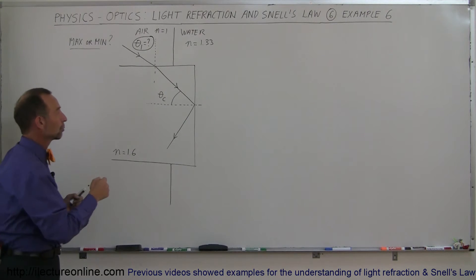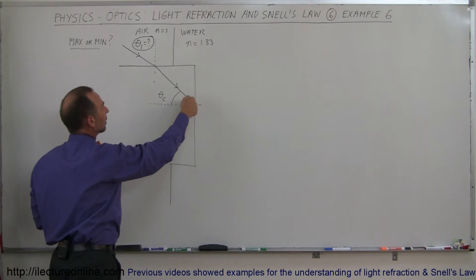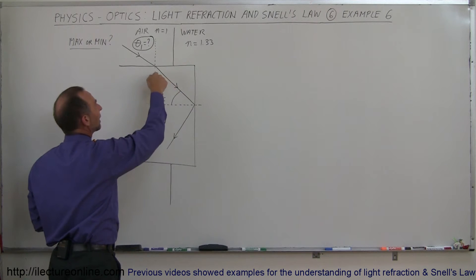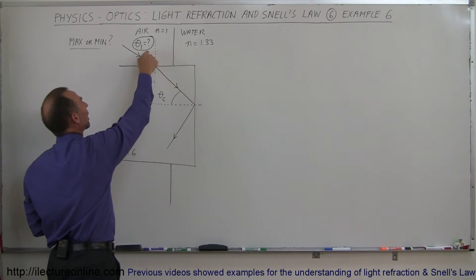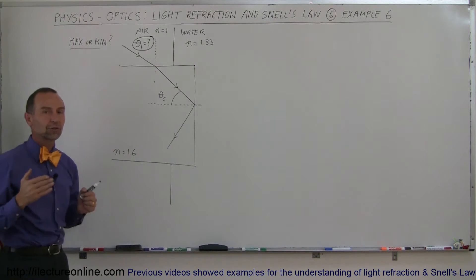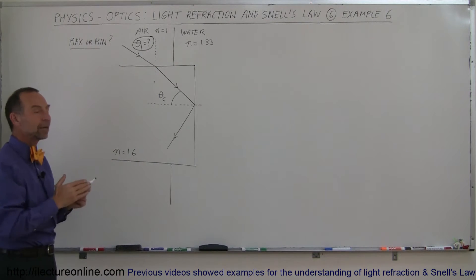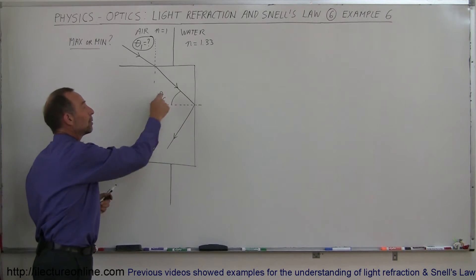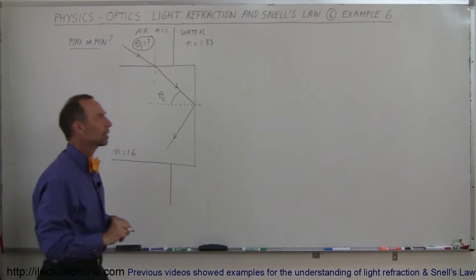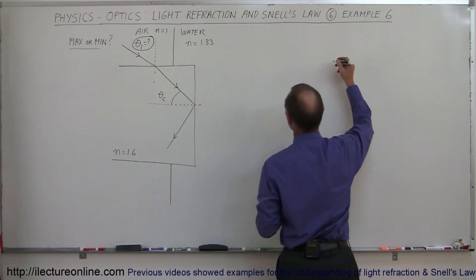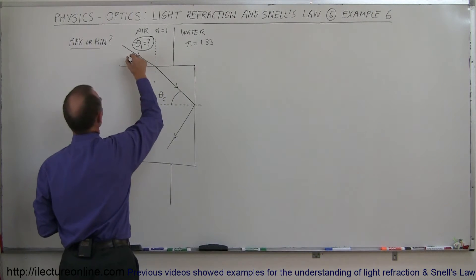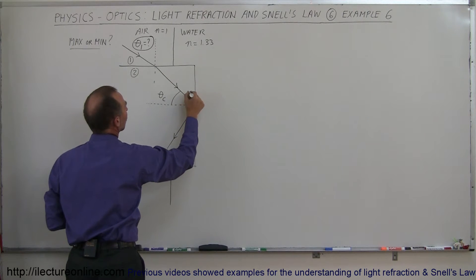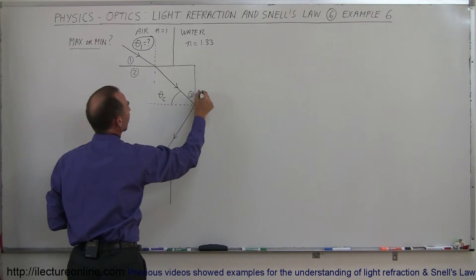To solve this we work backwards: we first have to figure out what the critical angle is, which will allow us to find the refracted angle, which will then allow us to find the incident angle. Let's call the media across the first boundary 1 and 2, and across the second boundary 3 and 4, and use the proper indices for Snell's law.